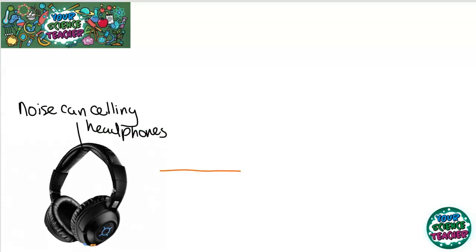What happens in this property called interference is that the waves either add up or take away from one another. And in noise canceling headphones, if you've got a sound wave coming in looking like this, what the noise canceling headphones will do is it will produce a wave in the opposite direction and this causes the waves to cancel one another out.